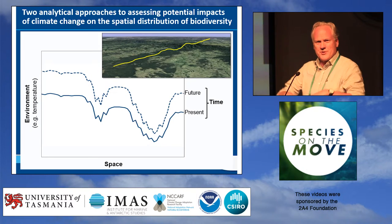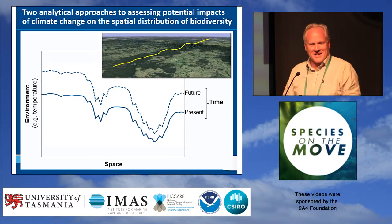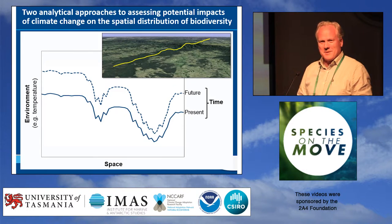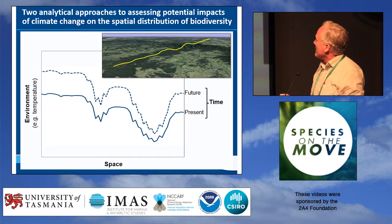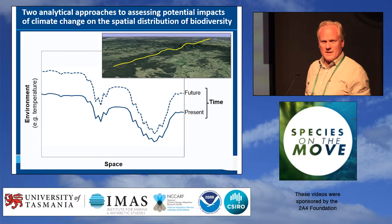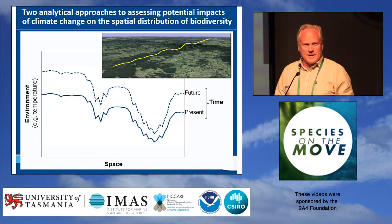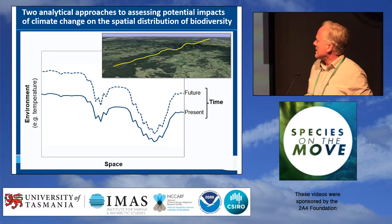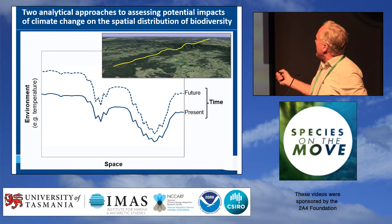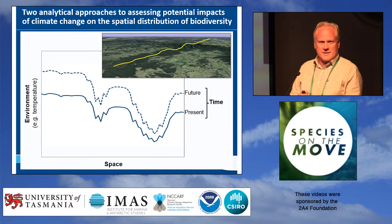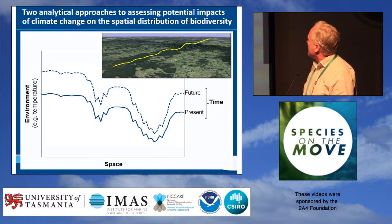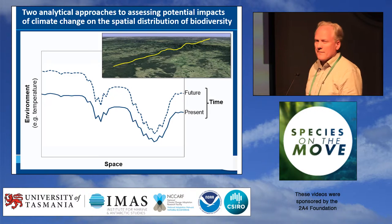I'm going to start off by trying to reduce the multi-dimensional complexity of the challenge we're dealing with this week down to a simple two-dimensional diagram. What I've got here is space reduced to a single dimension — just imagine a transect across the landscape. Then we have an environmental variable or gradient as the y-axis. Think of, for example, temperature. And then just think about the different lines in this diagram representing different times, so you've got the environment changing with climate change over time.